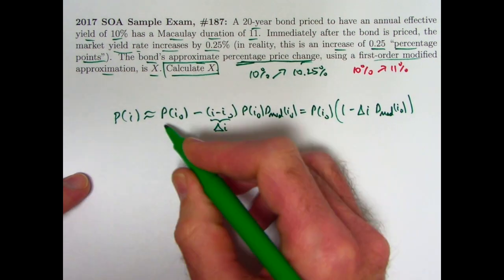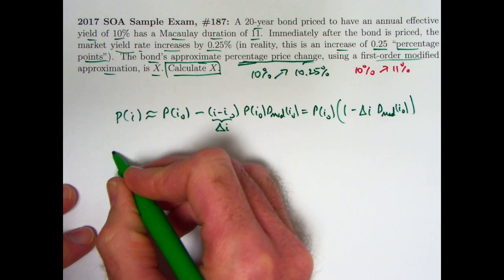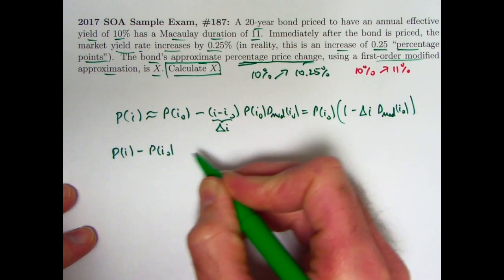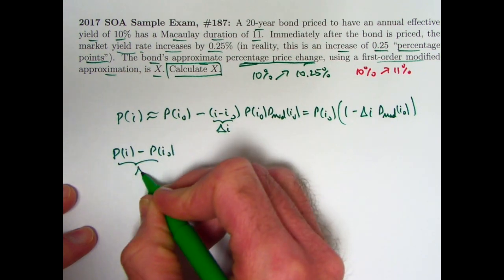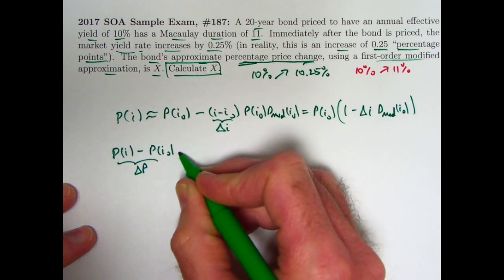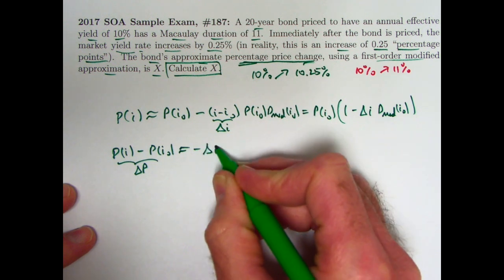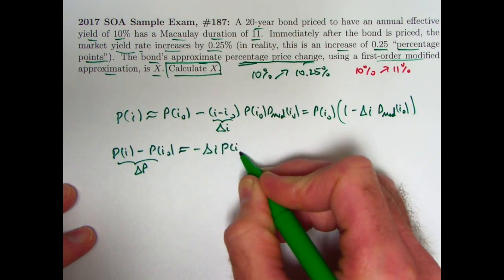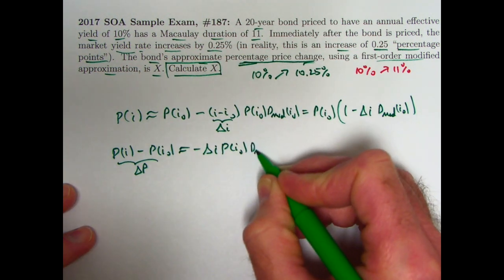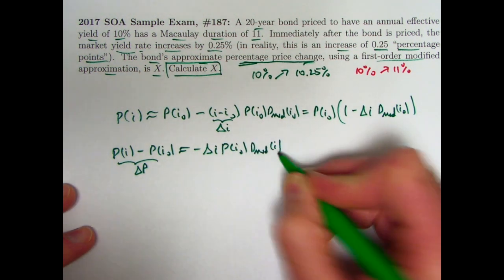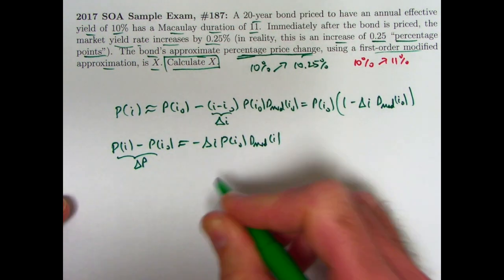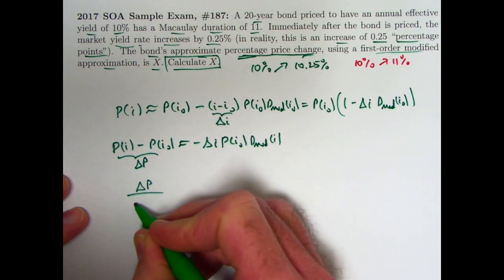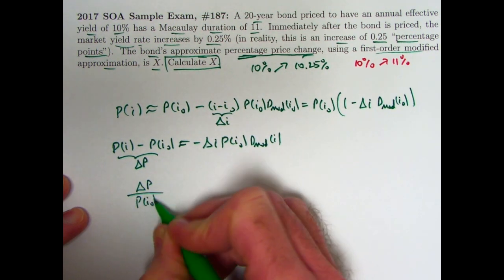And I'm going to do something different from both of these in this video. I'm going to take this form of it, and I'm going to subtract P(i₀) from both sides. P(i) minus P(i₀), which you could call delta P, change in the price, is approximately negative delta i times the price at yield rate i₀ times the modified duration. And in fact, I'm going to do one more thing. I'm going to divide both sides of this now by P(i₀). Why am I doing this?